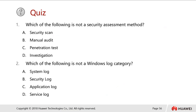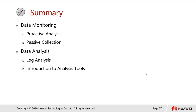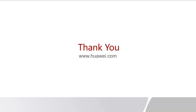We come to the end of this chapter with two quiz questions. Question 1: Which of the following is not a security assessment method — security scan, manual audit, penetration test, or investigation? The answer is investigation. Question 2: Which of the following is not a Windows logs category — system logs, security logs, application logs, or service logs? The answer is service logs. In summary, we covered data monitoring, proactive and passive analysis, log analysis, and an introduction to analysis tools.